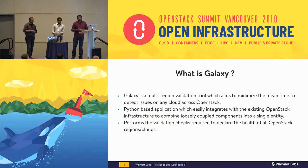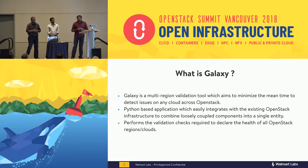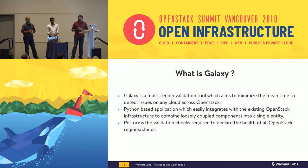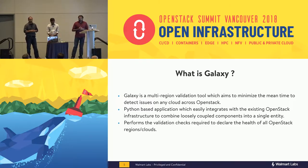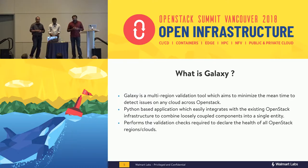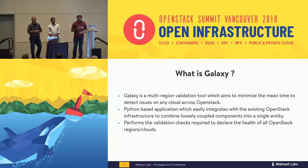Keeping all these things in mind, we developed a product called Galaxy. Galaxy is a multi-cloud validation tool aimed to minimize the mean time to detect any issues across all OpenStack clouds. Currently it's integrated to OpenStack clouds, and it can be extended to other public cloud providers. It's a Python-based application already integrated to all our OpenStack clouds, and we use it to do all checks, validation, and declare health of cloud across multiple regions.